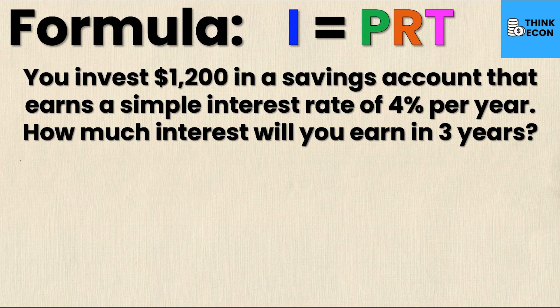Let's say that you invest $1,200 in a savings account that earns a simple interest rate of 4% per year. How much interest will you have earned in three years? When looking at a question like this you need to find your P, your R, and your T.